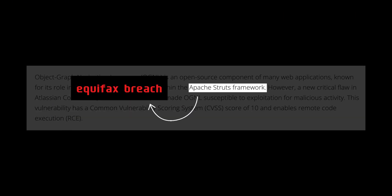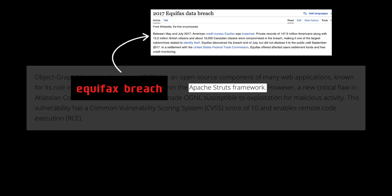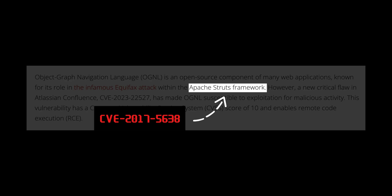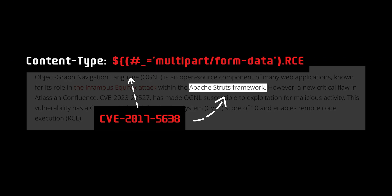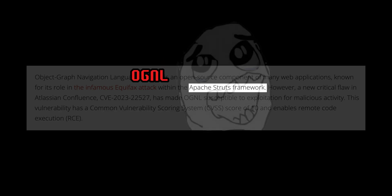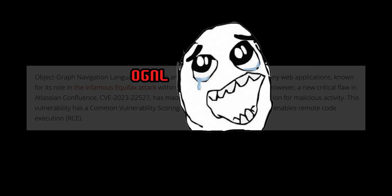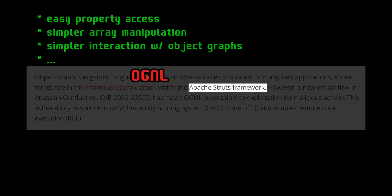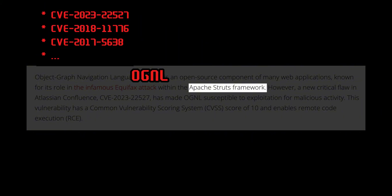It is also worth noting that the Equifax breach was mentioned here. This is one of the largest data breaches in history which exposed around 140 million personal records. Attackers also exploited a vulnerability in Apache Struts via an OGNL expression which led to remote code execution. So this expression language really has a bad history. Although it provides a lot of benefits, it also has huge security implications if not handled properly.